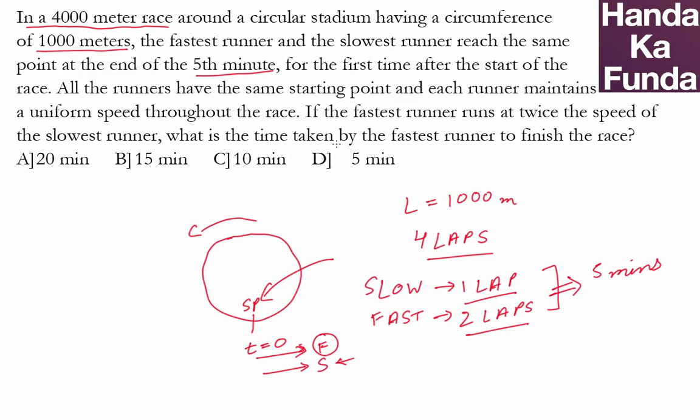What is the time taken by the fastest runner to finish the race? If the fastest runner does two laps in five minutes, how much time will he take for four laps? He'll take 10 minutes, which is given to us as option C. And that is our answer. Thank you.